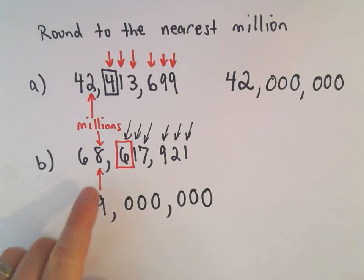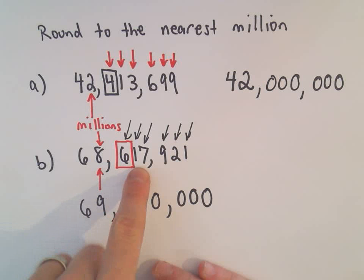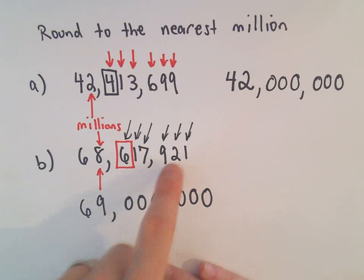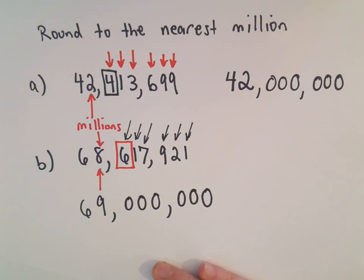All right, so maybe there's something in space that's 68,617,921 miles away from the Earth. You can say, well, that's pretty close to being 69 million miles away from the Earth.